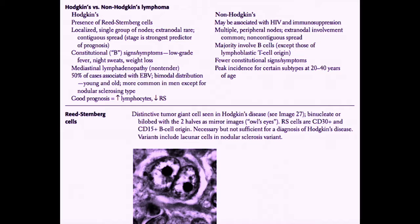Lymphoma is divided into two categories: Hodgkin's lymphoma and non-Hodgkin's lymphoma. For Hodgkin's lymphoma, a special cell called the Reed-Sternberg cell must be present on biopsy for the diagnosis to be made — it is necessary but not sufficient for the diagnosis of Hodgkin's lymphoma. Reed-Sternberg cells are not present in non-Hodgkin's lymphoma.